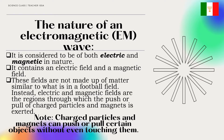Electromagnetic wave, as its name suggests, is considered to be of both electric and magnetic in nature. In other words, an electromagnetic wave contains an electric field and a magnetic field.